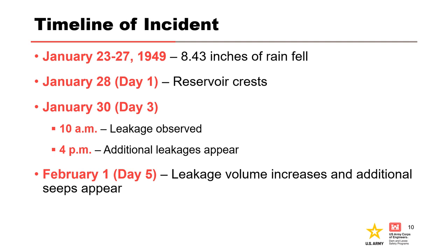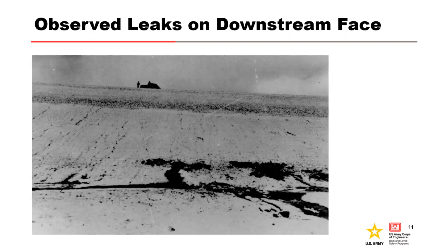Three days later, the leakage volume increased, and additional seepage appeared between Station 10 and Station 14+40. This is a photograph from 1949 of one of 30 or more initial leaks that appeared on the downstream face of the dam at the closure section. The leakage appears to be carrying fine-grained material. The silhouettes of two people standing on the crest of the dam next to a car can be seen in the background.